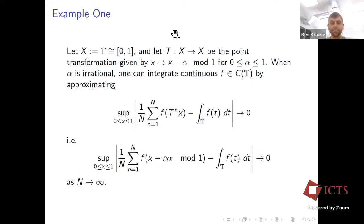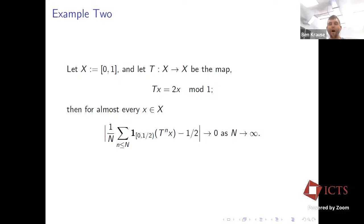The second example comes from a problem in chapter six of Stein and Shakarchi's real analysis textbook — this is the problem that got me interested in ergodic theory. Let X denote the unit interval; this time T is going to be the doubling map. The conclusion is that for almost every X inside of this interval, if I keep iterating X — keep doubling X and evaluate in the unit interval, or the first half of the interval — this converges to the measure of the interval as time progresses.